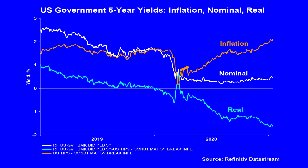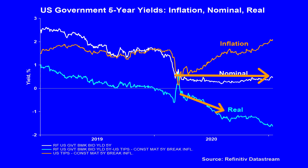The Fed will therefore be focused on real yields — that is, nominal yields minus inflation expectations. For most of last year, it has been inflation expectations that have been moving higher, in anticipation of loose fiscal and monetary policy. Nominal yields have largely moved sideways, such that real yields have drifted lower. Lower real yields are considered to be loose conditions because, in theory at least, it discourages savings in favor of spending and investment, though the reality is somewhat different.